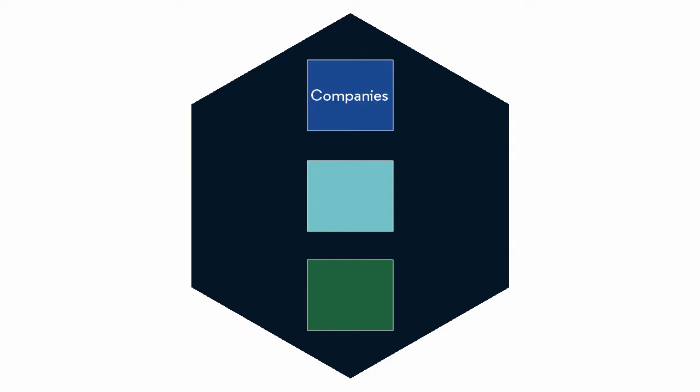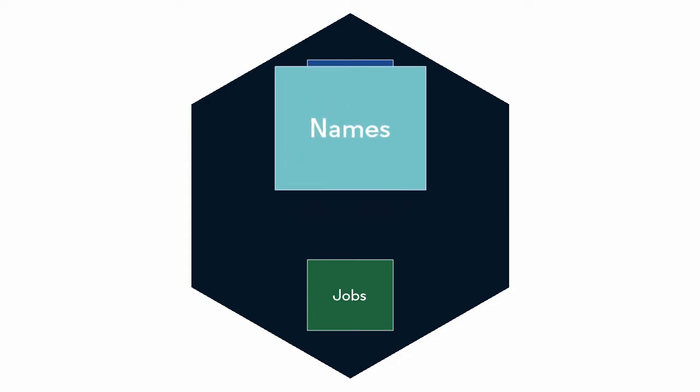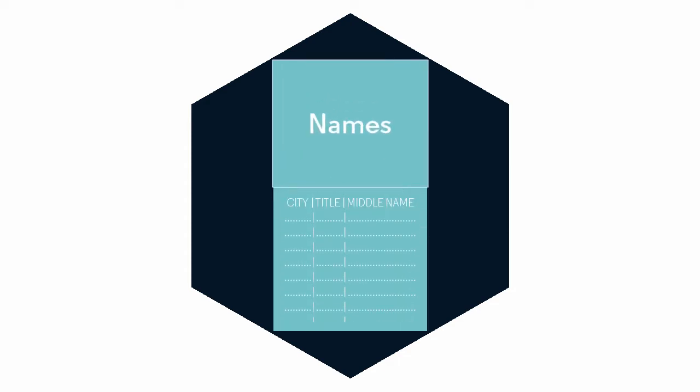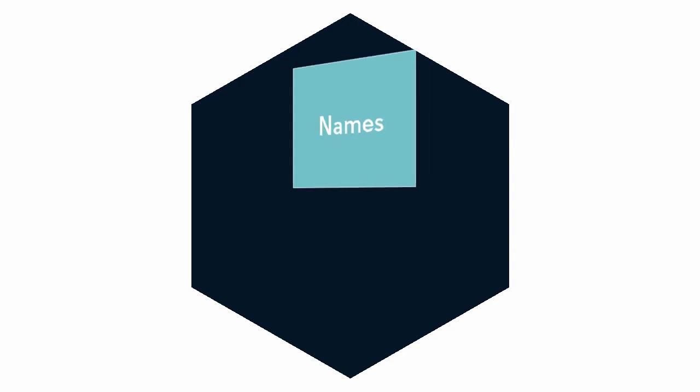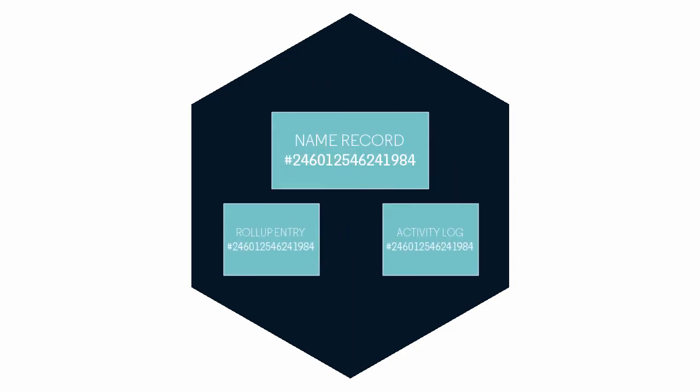PC Recruiter uses a relational database with multiple tables to contain different kinds of information. For example, there is a table for companies, a table for names, and a table for jobs. Each table has columns of data for the specific attributes of that record type, such as city, title, middle name, and so on. Every record in the main tables has a unique global identifier so that the system can track which records are related to each other and how.